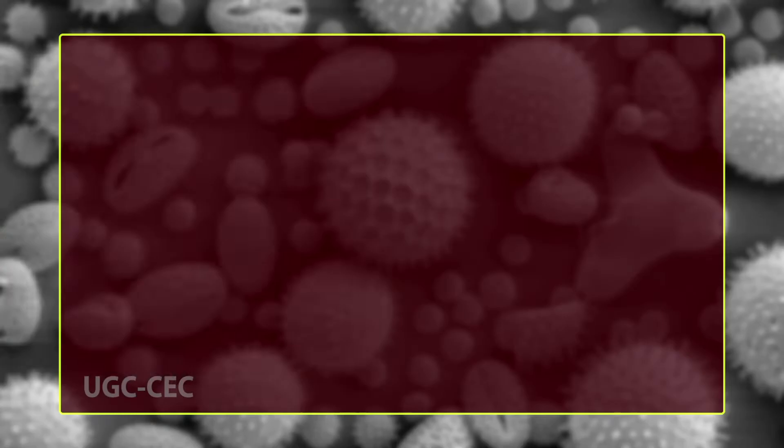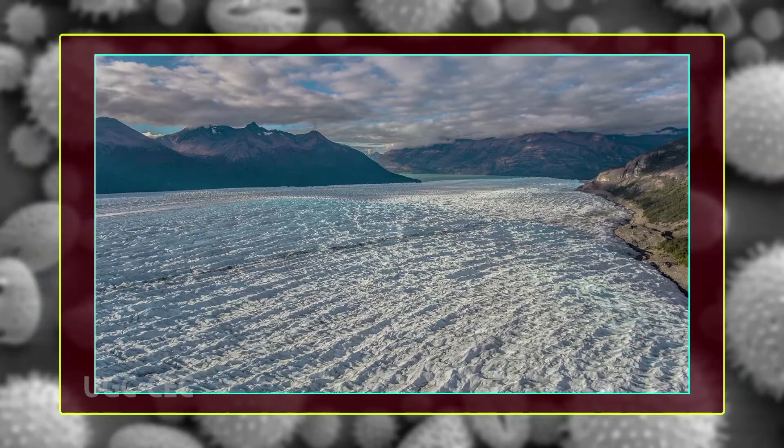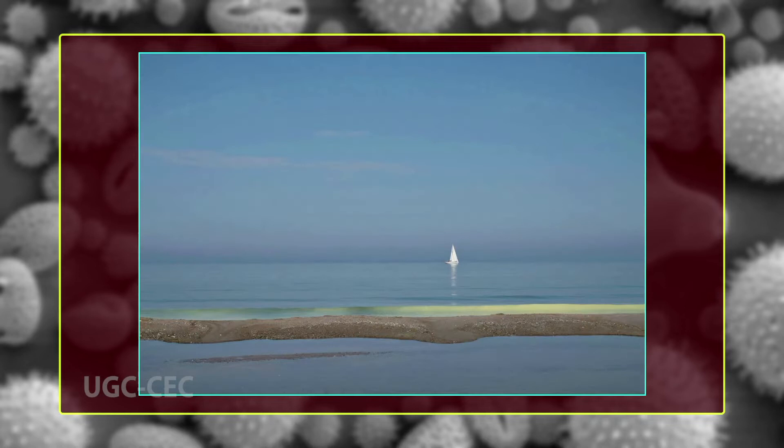Pollen grains are found in almost every type of habitat — for example, in glacier ice, in the air over pools, and over the oceans. Fossil pollens are found in peat and other sediments, in lignite, coal, and shells. They are evidenced in pre-Cambrian times, hundreds of millions of years ago.